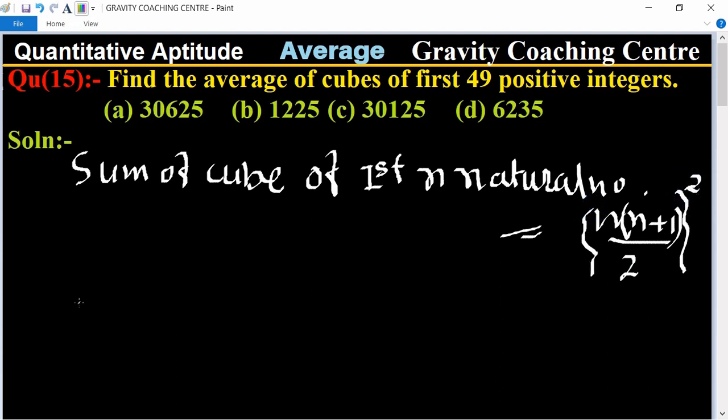So therefore sum of cubes of 49 positive integers equals, so put here 49 in a bracket of 49 plus 1 upon 2, whole squared.